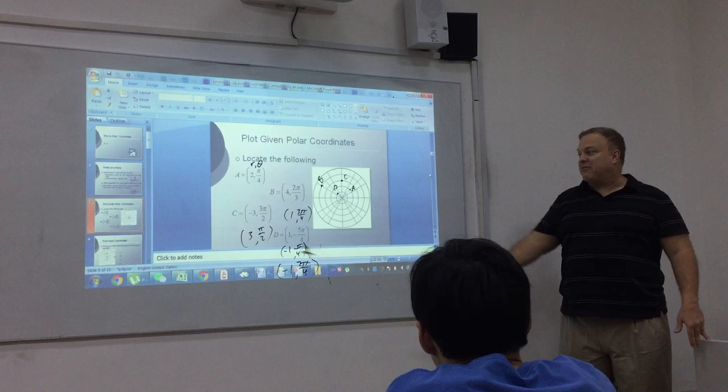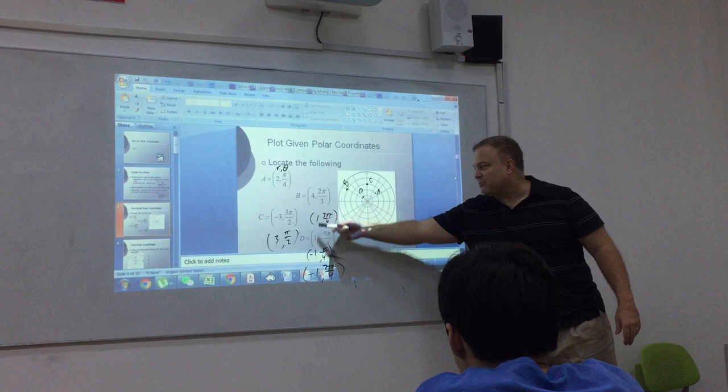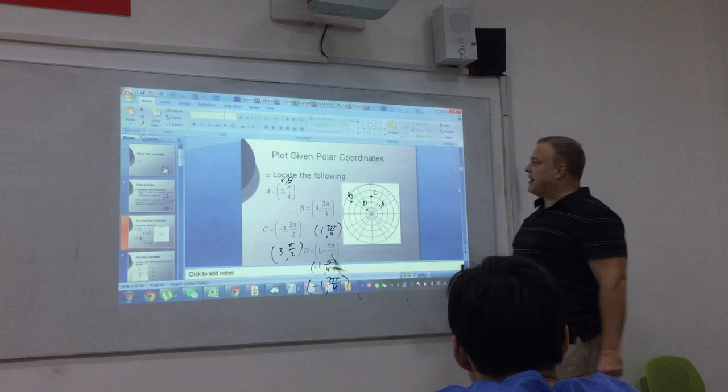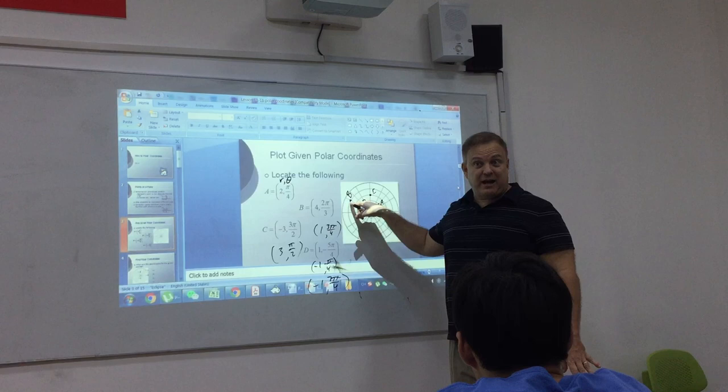And these are not even the only four possibilities. There are actually an infinite number. But these are the ones that I just happened to think of first. So, anyway, if I give you a point, just so you know, there's only one way to show that point in the graph.